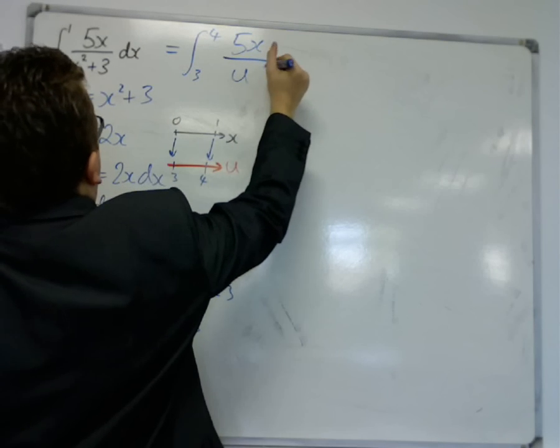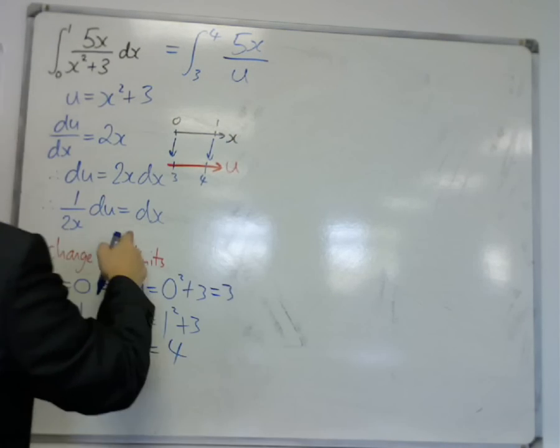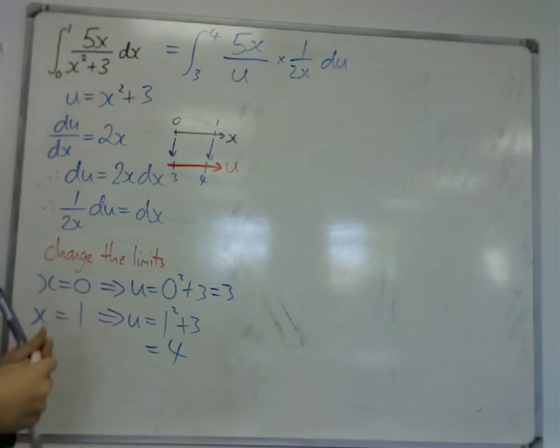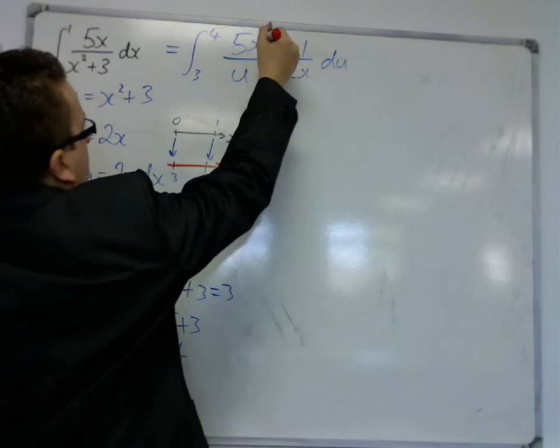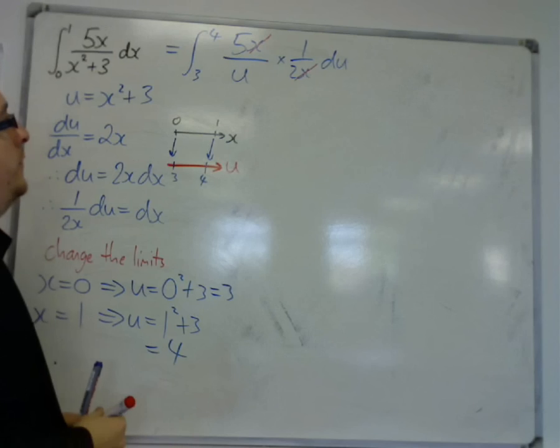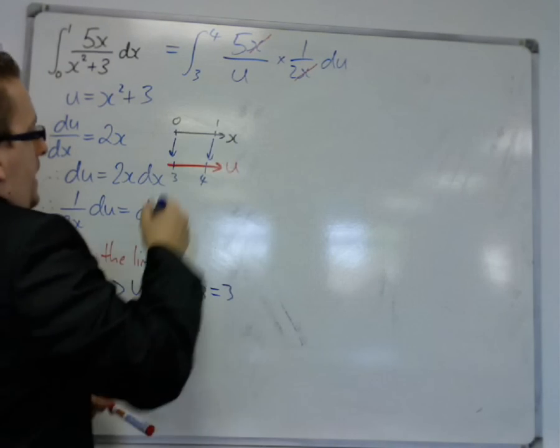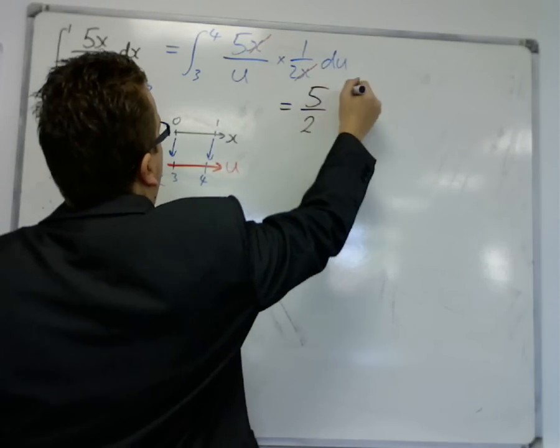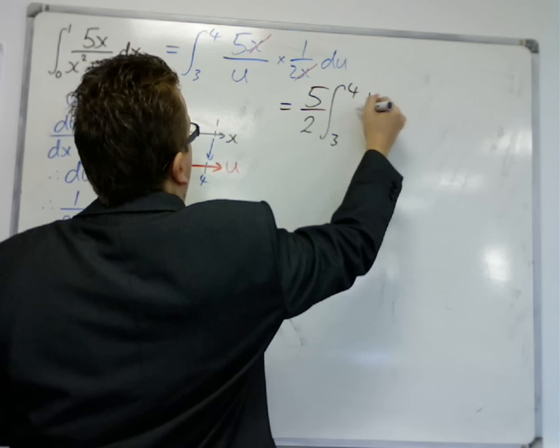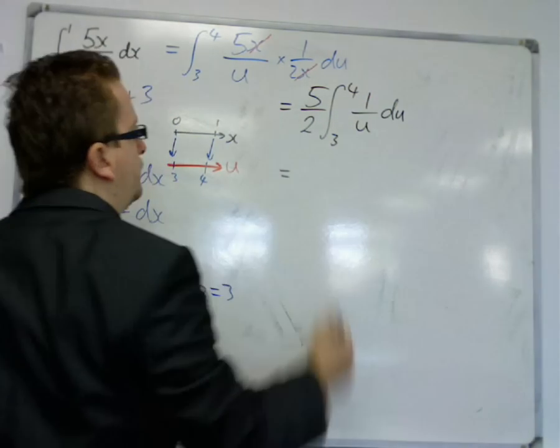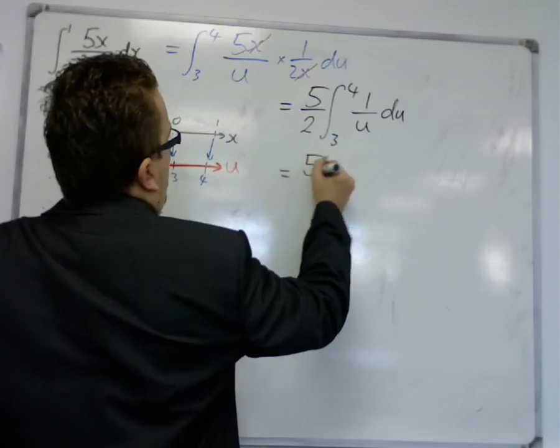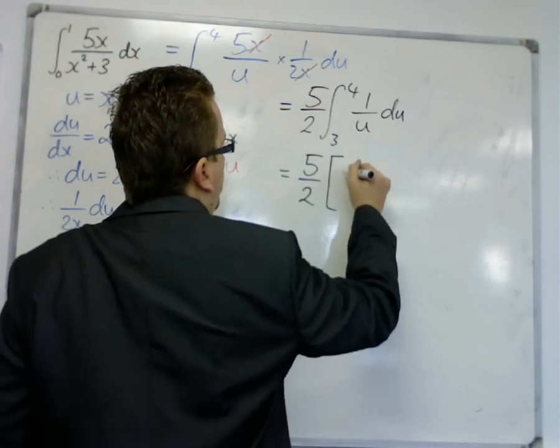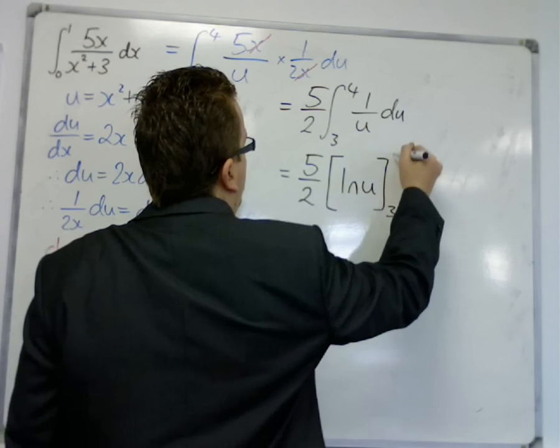5x over u. And dx was replaced with 1 over 2x du. Once again, you should start to spot the cancellation. So x over x. We've got 5 over 2 here. So that can be brought outside of the integral sign. Of 1 over u du.